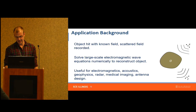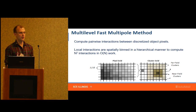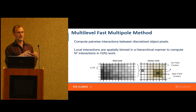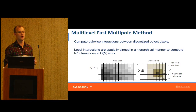I was brought on board to do some GPU work for it. The gist is that we reconstruct the object on a discretized pixel grid — so we're trying to get an image. This involves computing a bunch of pairwise interactions between all the pixels. The approach this application takes is called the multilevel fast multipole method, so instead of computing N-squared interactions between N pixels, you compute local interactions between local groups of pixels and aggregate those effects.